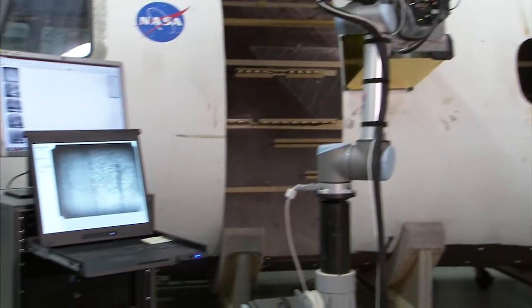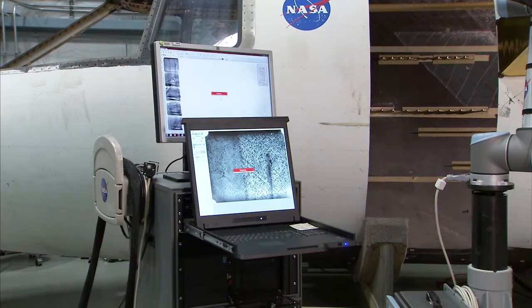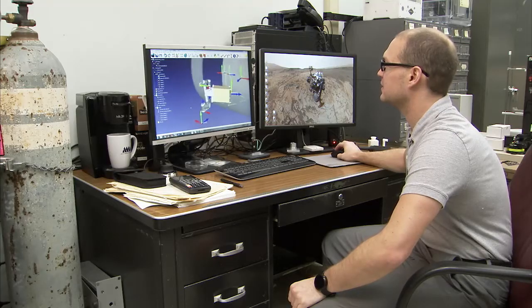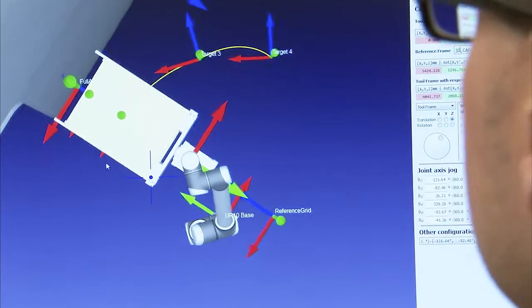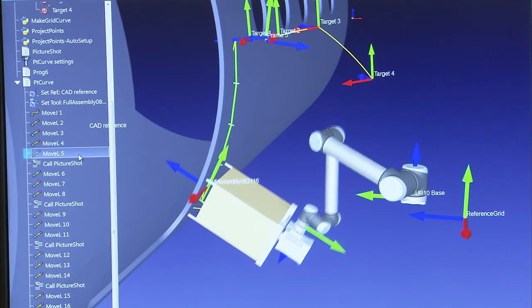One of the nice things about this robot is that in the computer, before you actually start moving the robot, you can develop the inspection pattern. You use a solid model of the fuselage or whatever structure you're inspecting. You have a solid model of the robot and the inspection tool on the end, in this case the infrared inspection system.